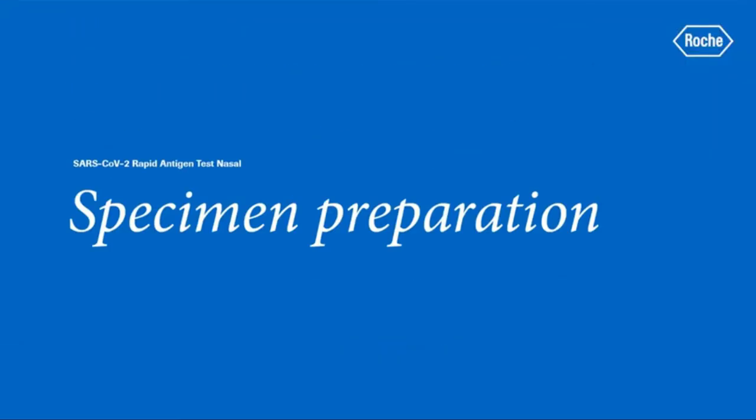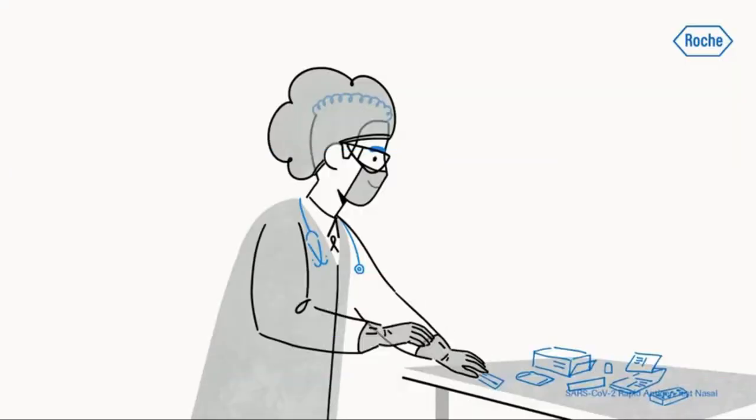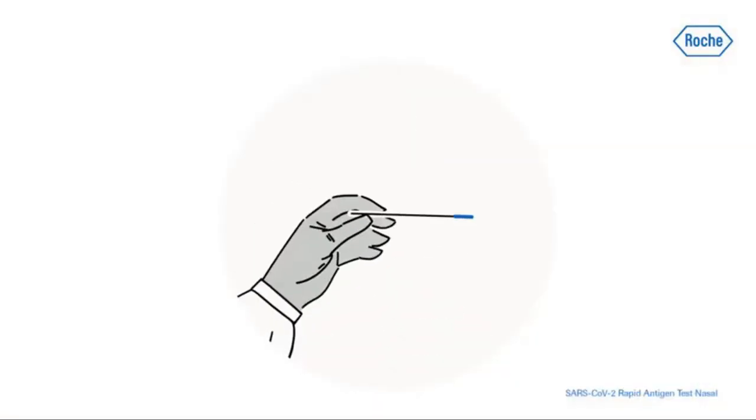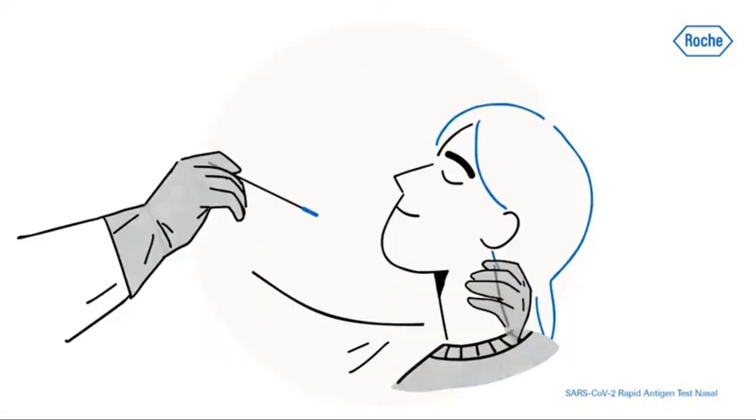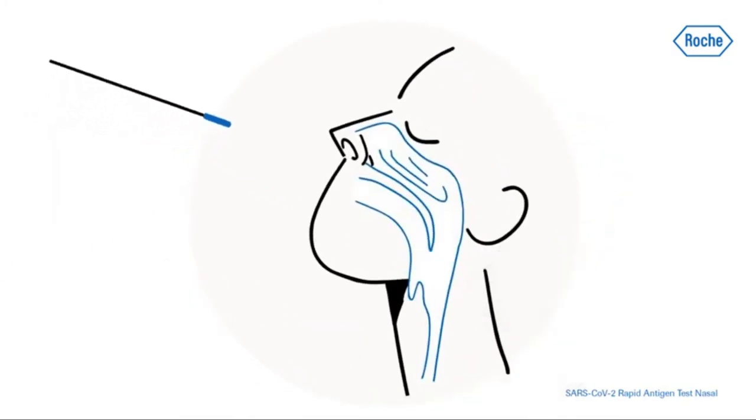Preparing the sample. Unpack the sterile swab and use a loose grip to hold it. Tilt the patient's head back slightly and insert the swab into the nostril which has the most secretion. Rotate the swab while inserting it two centimeters, slightly less than one inch, into the nostril and parallel to the palate until resistance is met at the turbinates.